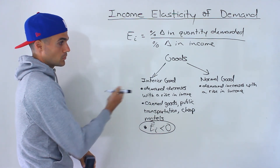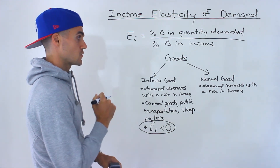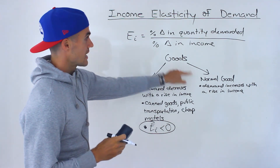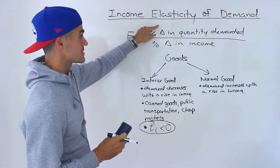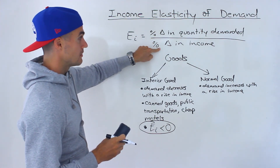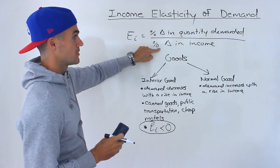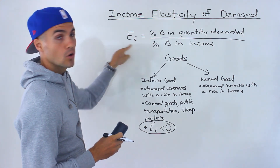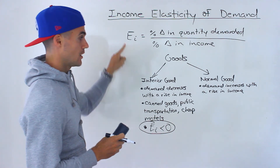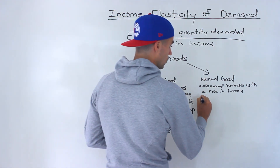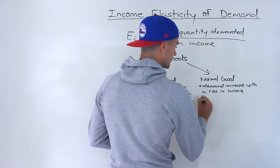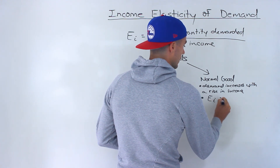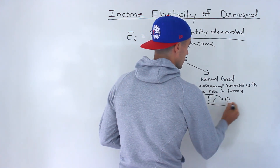For a normal good, demand increases with a rise in income. The numerator is going to be positive and the denominator is going to be positive as well. Positive over positive makes the coefficient positive. So for a normal good, that coefficient is positive or greater than zero.